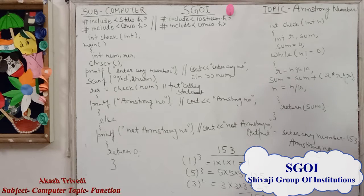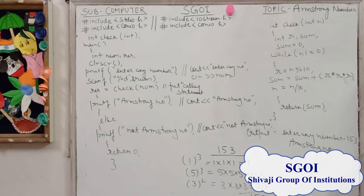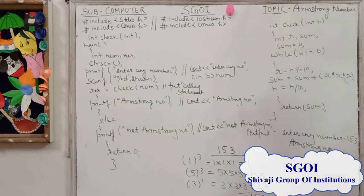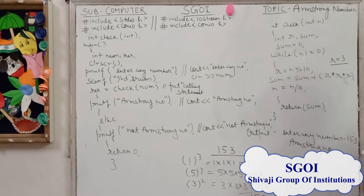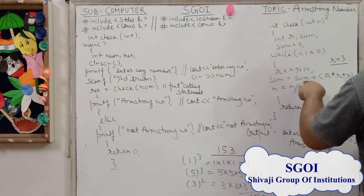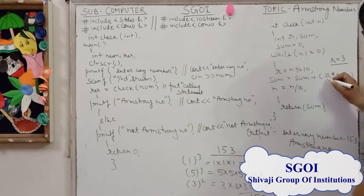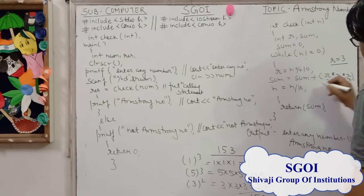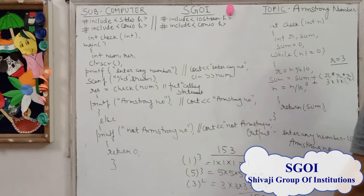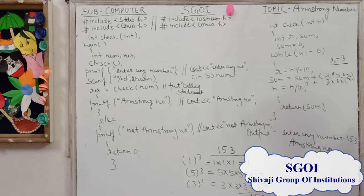Let's take the number 153. Since 153 is not equal to 0, the condition is true. r equals 153 mod 10, which returns 3 and stores it in r. The first time, sum equals 0, so sum equals 0 plus 3*3*3, that is 27. So 27 is stored in sum the first time. Then we divide 153 by 10, which gives 15.3, and we take only the integer value, that is 15.